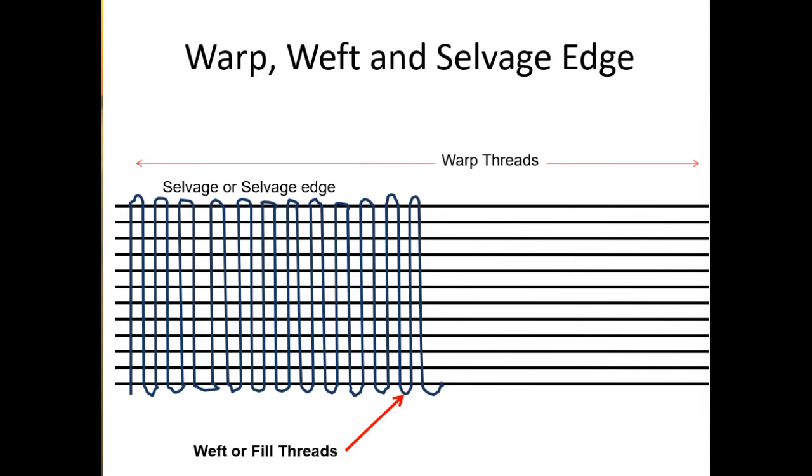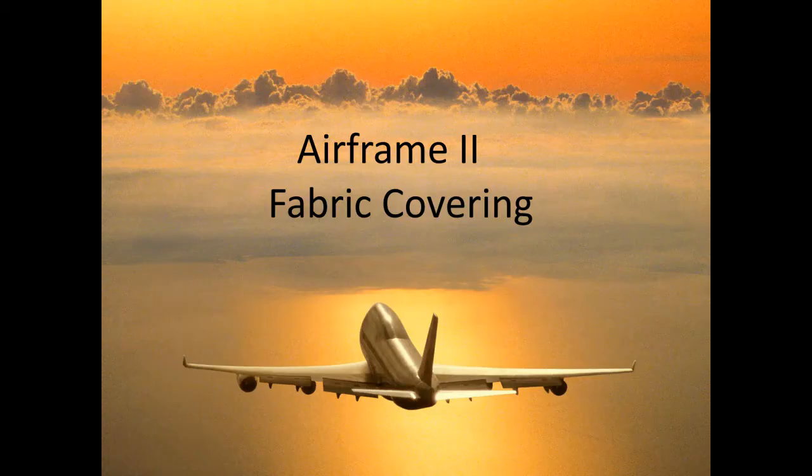The selvage edge is the naturally bound edge of a length of fabric — the manufactured edge. Just like rivets have a shop head and a manufactured head, the selvage edge is the edge of the fabric as it comes from the factory. A bias cut is a fold or seam made diagonally across the warp, like a 45-degree angle to the warp fibers.